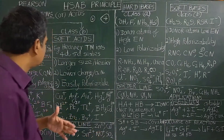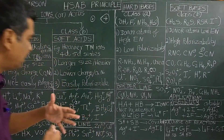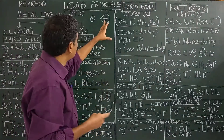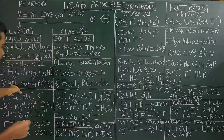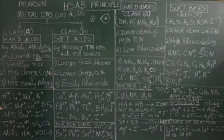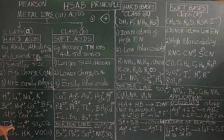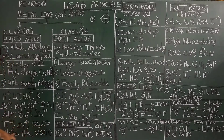Soft acids are easily polarizable. Examples of hard acids include: H+, Li+, alkali metal ions, BF3, Al3+, In3+, Ti4+, VO4+, SO3, CO2, AsF3, HX, and vanadyl ions.